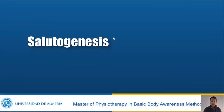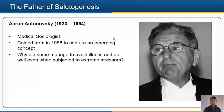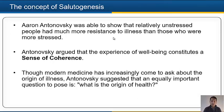The second part of this topic is salutogenesis. When we are talking about this concept, we are referring to Aaron Antonovsky, who is considered the father of salutogenesis. He was a medical sociologist and in the 1960s he captured these concepts. He made this interesting question: why did some people manage to avoid illness and do well even when subjected to extreme stressors compared to other people who didn't? He was able to show that relatively unstressed people had much more resistance to illness than those who were more stressed.